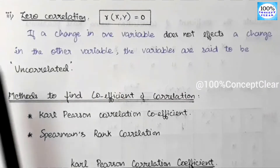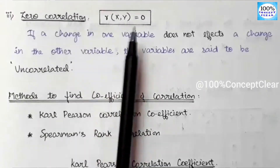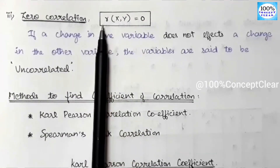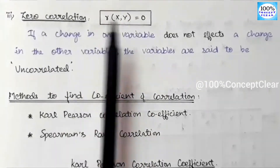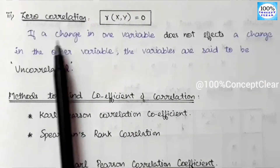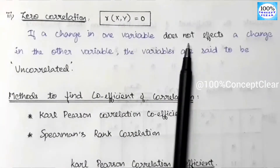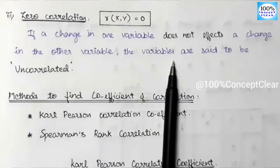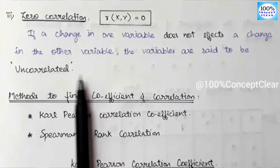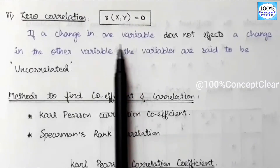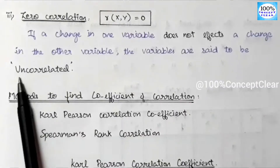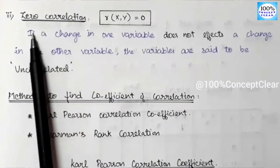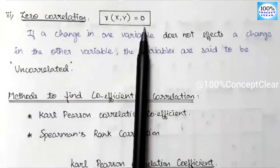The third type is zero correlation. The correlation coefficient is equal to 0. If there is a change in one variable, it does not affect a change in the other variable — the variables are said to be uncorrelated. That means we are zero correlated, and the correlation value is equal to 0.